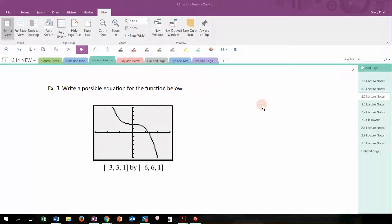All right, so this last example we're going to look at asks us to take a graph that's already given and see if we can come up with some sort of possible equation that would be similar to the graph that we're looking at.